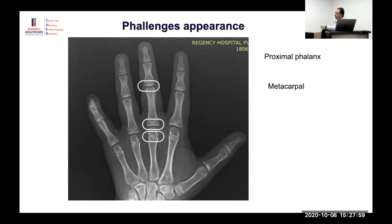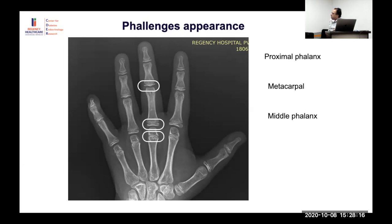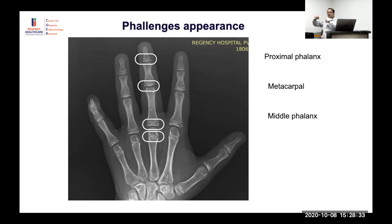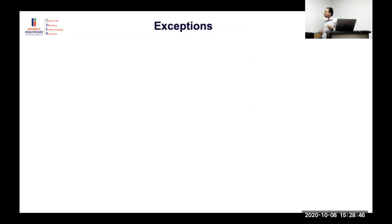The sequence of phalangeal appearance is: proximal phalanx first, then metacarpal, then middle phalanx, then distal phalanx. If an X-ray shows only proximal phalanx versus one with metacarpal as well, you know the second is older. With middle phalanx it is older still, and distal phalanx older again. This is about appearance, valid up to around three to four years.